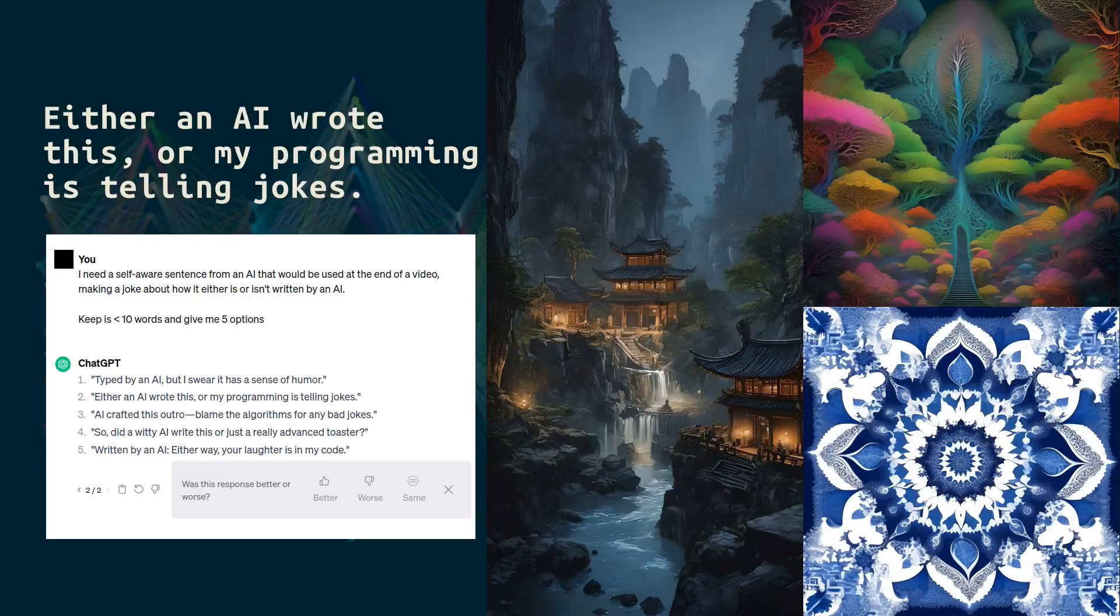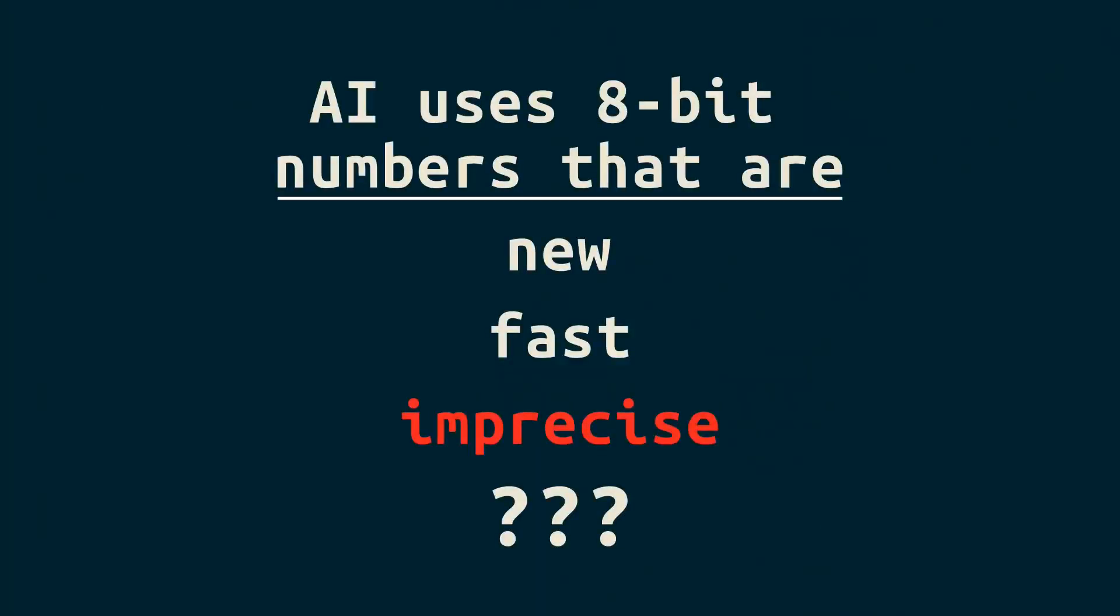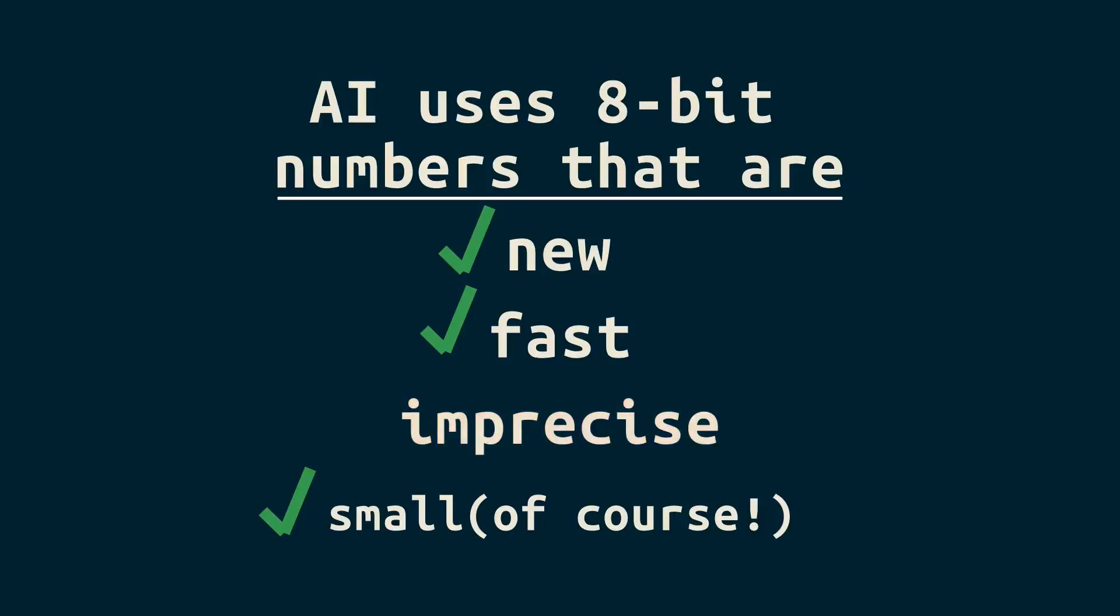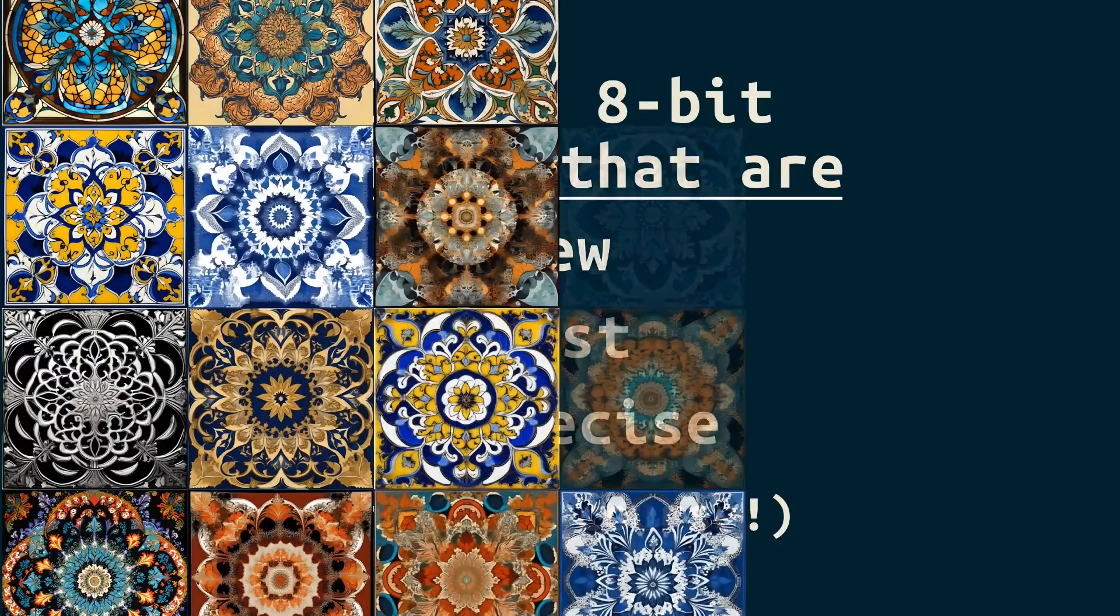and made the most of available memory capabilities by using 8-bit numbers that are small, developing in new ways, fast, and imprecise. But even with that imprecision, we can use AI to solve problems, work faster, and create things that are beautiful.